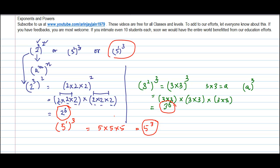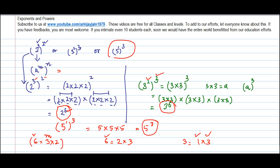In all these cases there is one thing in common. When you look at two to the power six, the power six equals three times two. Similarly, three to the power six, where six equals two times three. And five to the power three, where three equals one times three. In all these equations, the final power is the product of the two original powers.